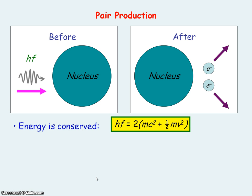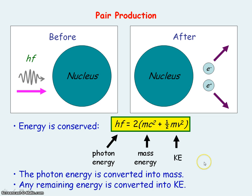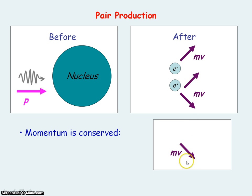Energy must be conserved in this process: the original photon energy is converted into mass energy to produce the electron and positron pair. Any remaining energy is converted into kinetic energy, which is divided equally between the electron and the positron. Also, this process must conserve momentum, so the total momentum after should equal the total momentum before.